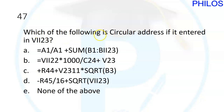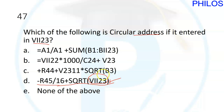Question forty-seven: which of the following is a circular address if entered in cell VII23? A circular reference is when a formula in a particular cell makes reference back to that same cell. The correct answer to question forty-seven is D.